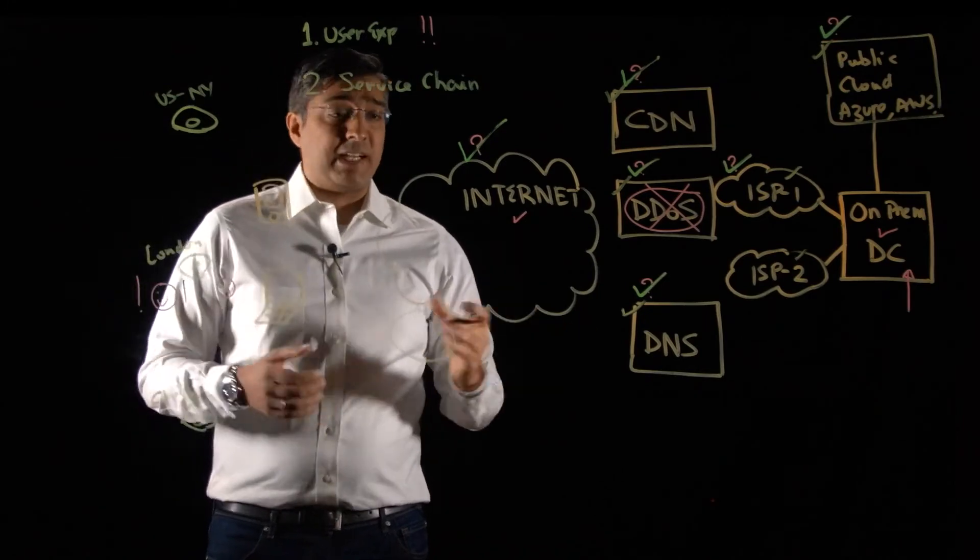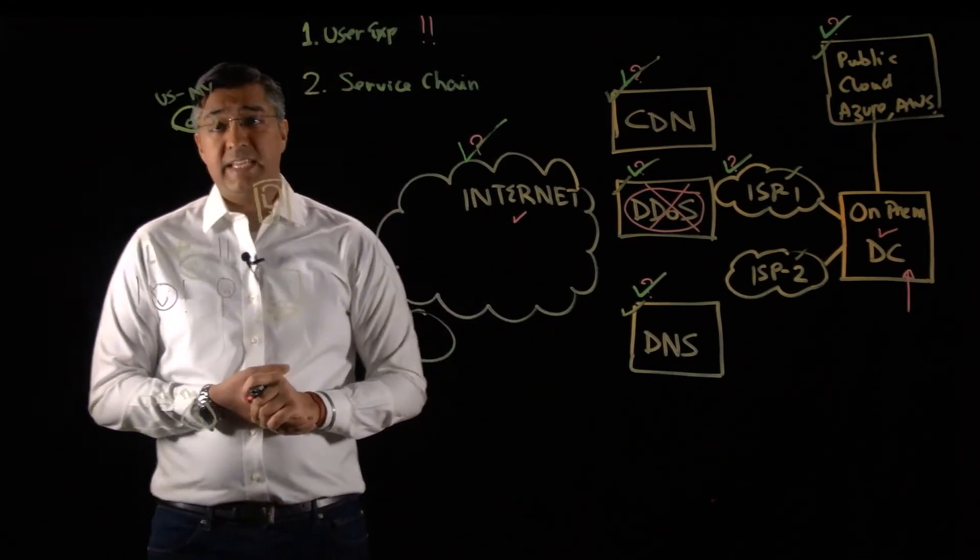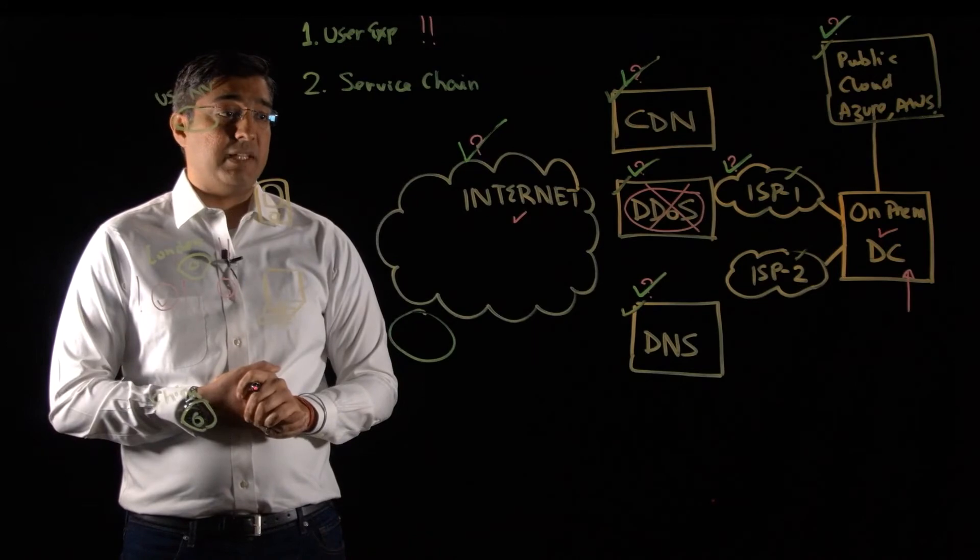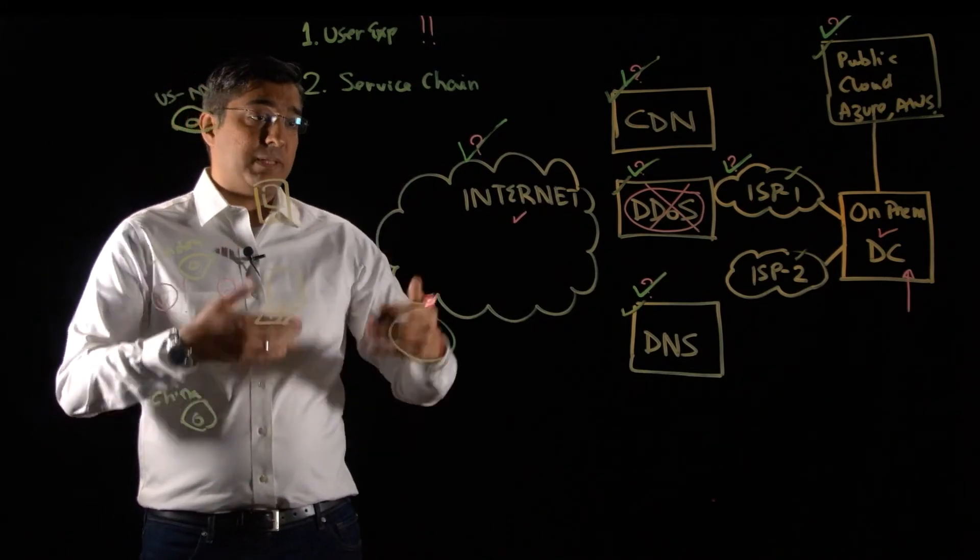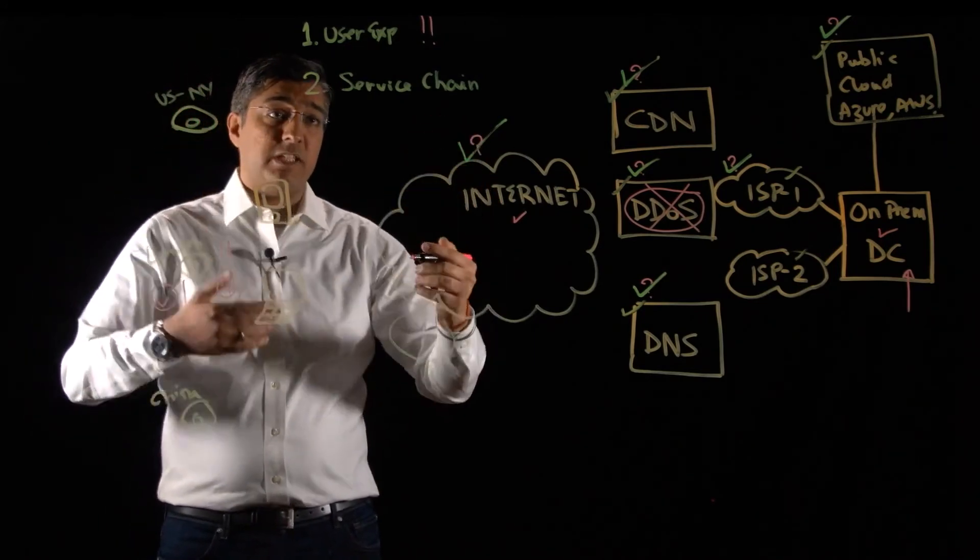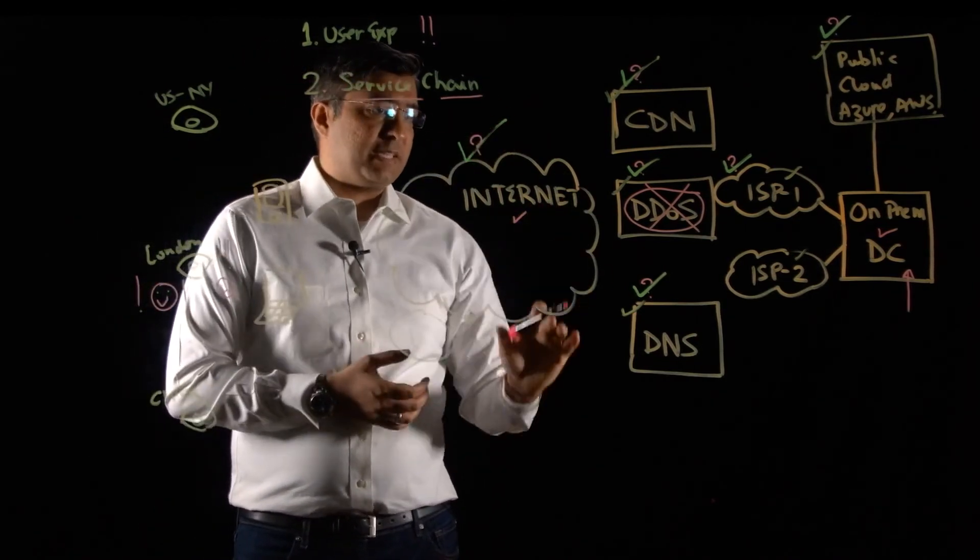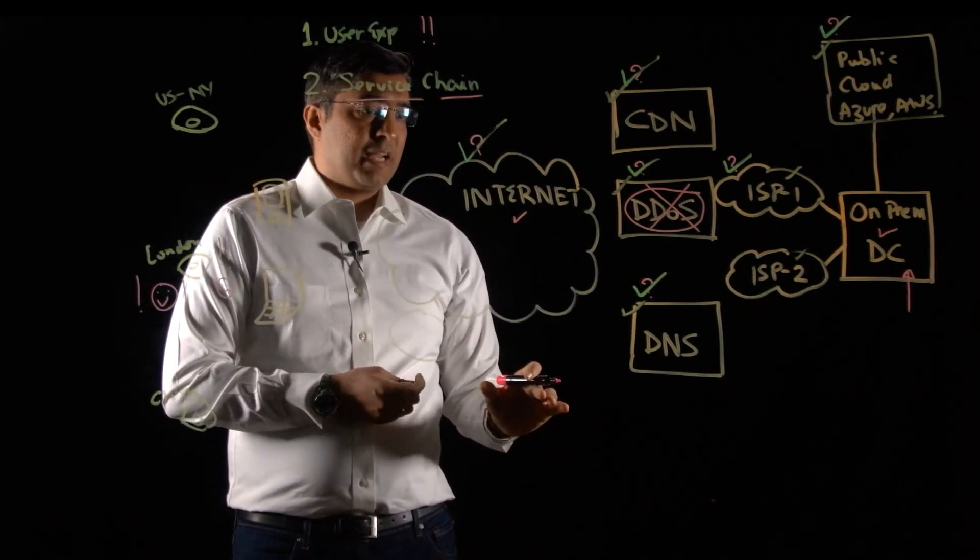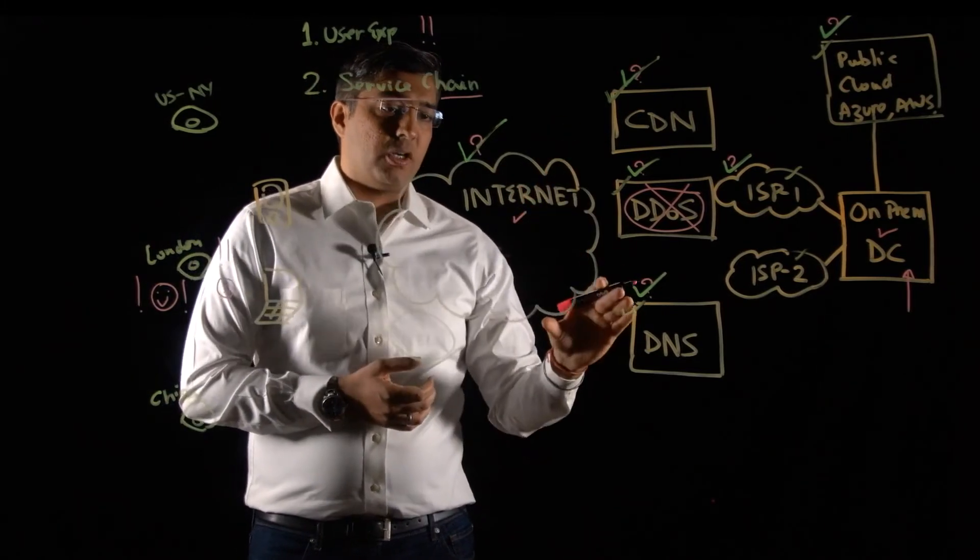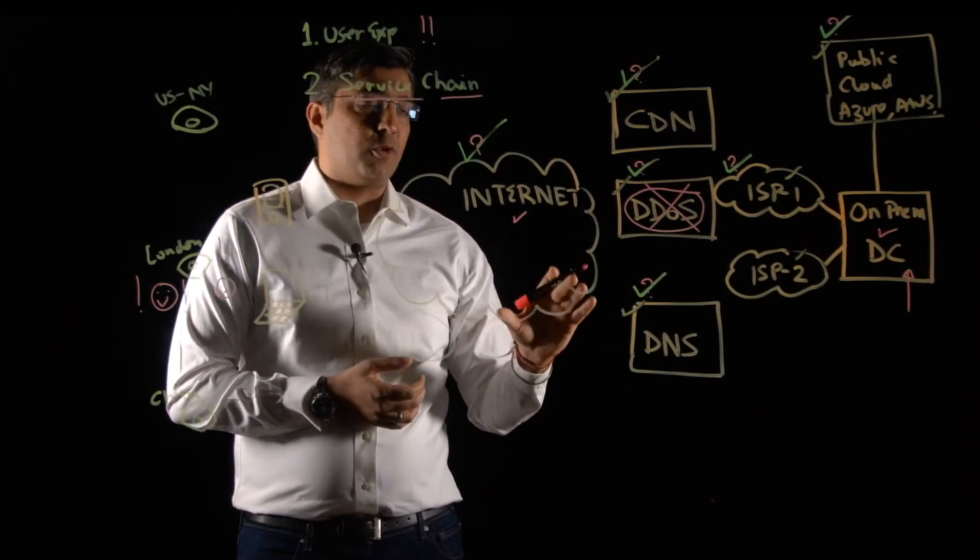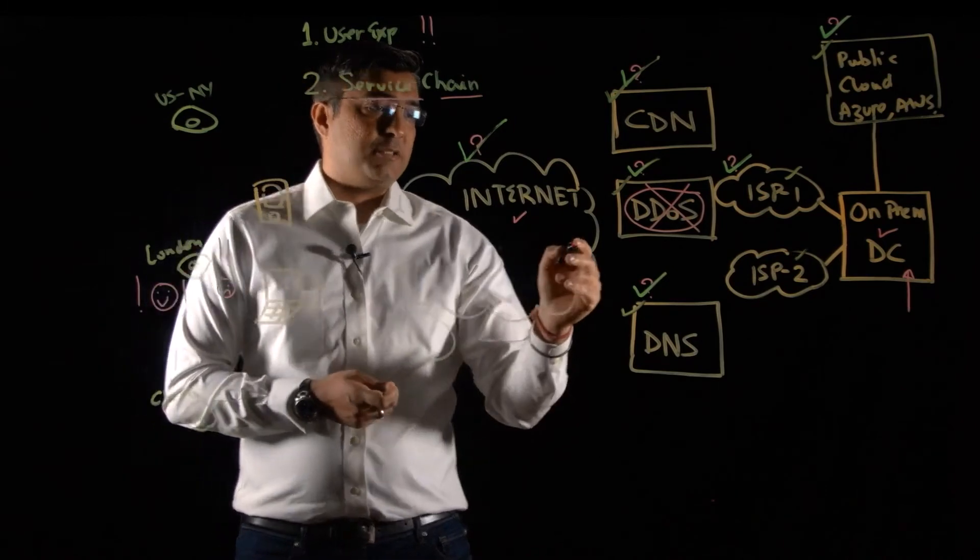This is a normal practice for a lot of my customers. Anytime they have a P1 event, anytime they have an event where they're having issues, they will actually open up ThousandEyes and look at the full service delivery chain based on the alert and say, hey, which part of my service delivery is having an issue? And then the SEV call or the P1 call will focus on isolating that specific issue.